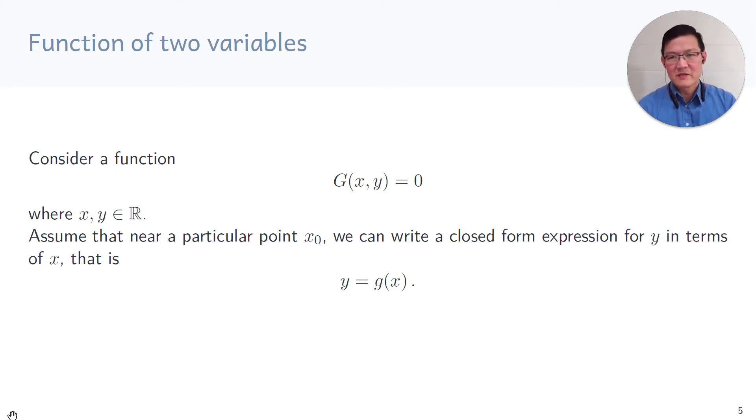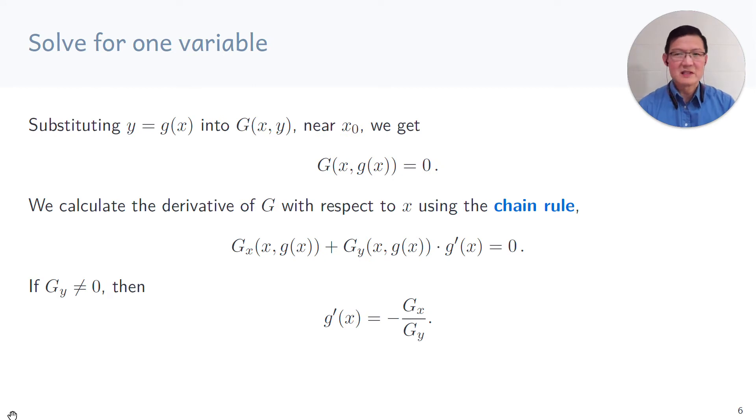So consider the function g, which is homogeneous as we've seen before, g of x and y equals zero. We assume that near a particular point x we can write a closed form expression in terms of x. So explicitly we write y in terms of little g of x. By substituting this explicit function of x into g near x zero, we can then get this function big G of x which is purely in terms of x. Now because we have a function purely in terms of x, we can calculate the derivative of G with respect to x using the chain rule.